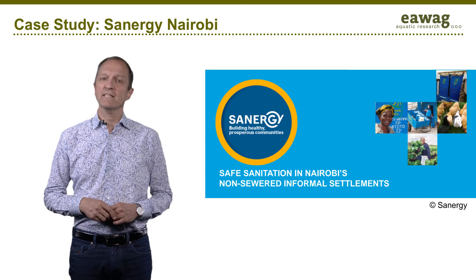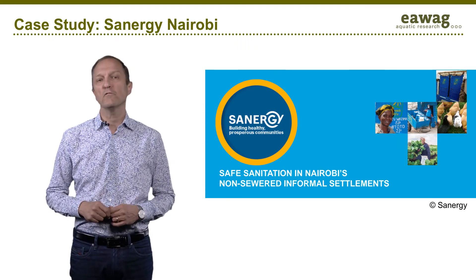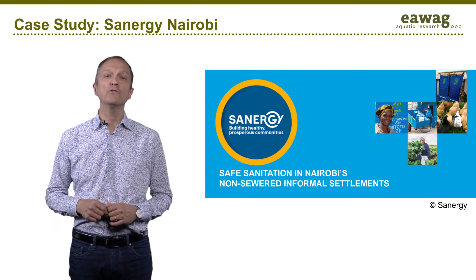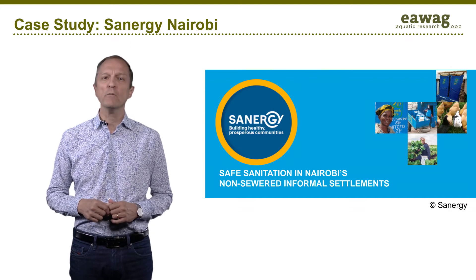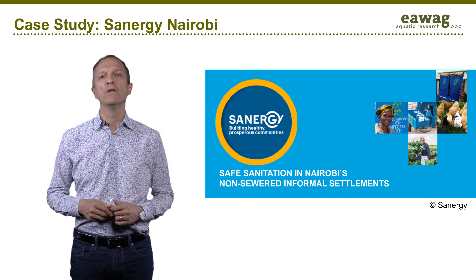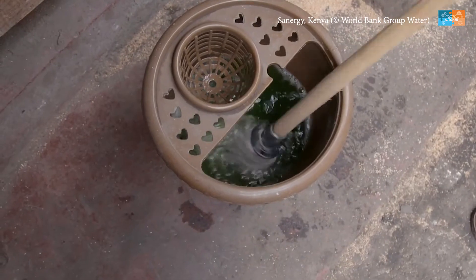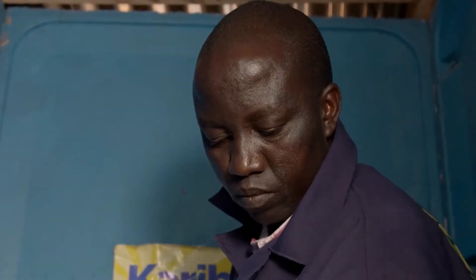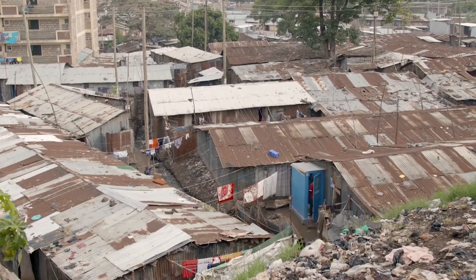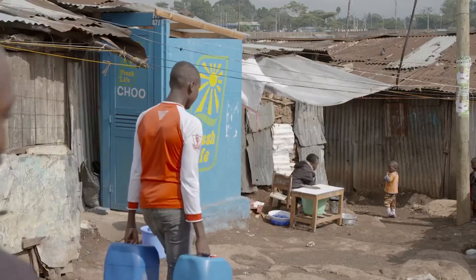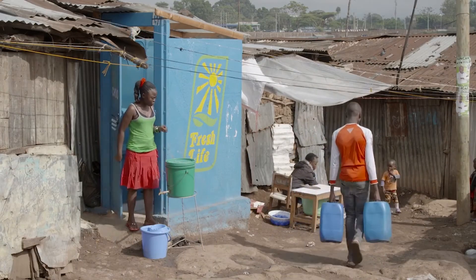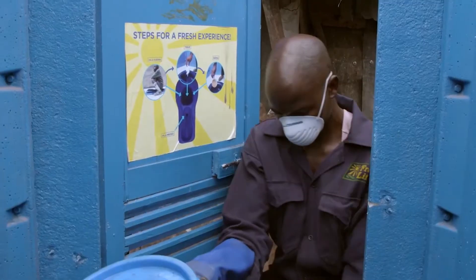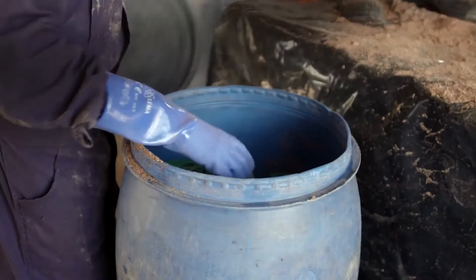I'd like to introduce a successful example of container-based sanitation from Nairobi, Kenya. Sanergy is a non-profit social enterprise founded in 2011, which aims to provide affordable sanitation services for the non-sewered informal settlements in Nairobi. The case of Sanergy is interesting because it shows a range of possibilities that container-based sanitation offers for the entire sanitation chain, from the toilet to regular collection and waste transformation and resource recovery. Sanergy's model is just one example of a number of business models currently being tested for CBS systems.